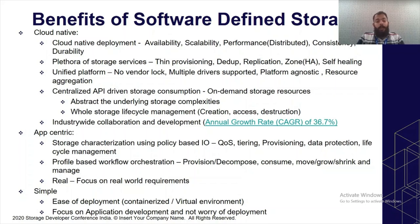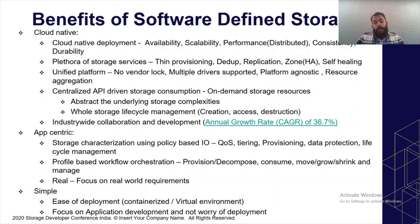Being API-centric means there is a policy-driven IO payload. When an application is developed, it has a policy file describing what the underlying storage should look like. Requirements such as QoS, steering, provisioning, data protection, and lifecycle management are all governed by policy. Based on application workloads, orchestration handles provisioning, decomposing, taking regular snapshots, consuming, moving, growing, and shrinking storage — for example through thin provisioning.